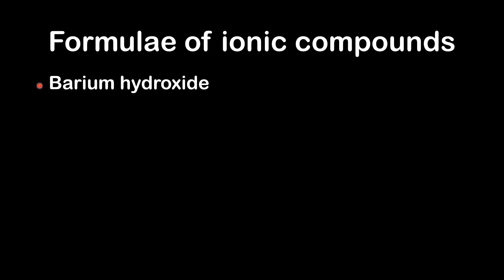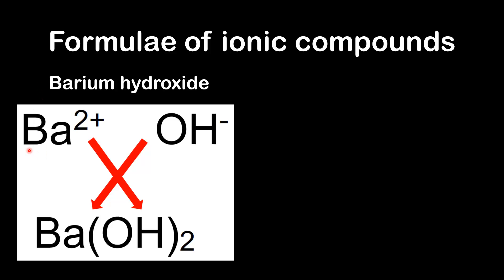Next we will try barium hydroxide. So the barium ion is Ba2+. The hydroxide ion is OH-. We use the crossover technique and the 2 goes to the bottom here. Because it's a polyatomic ion we have to use brackets. So the formula is Ba(OH)2.